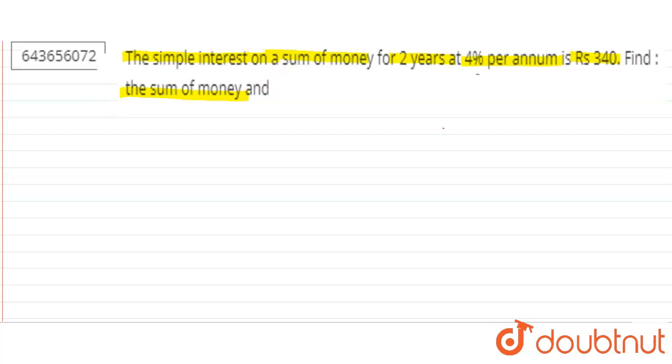We need to find the principle. Now, using the formula for simple interest: SI = (P × R × T) / 100.